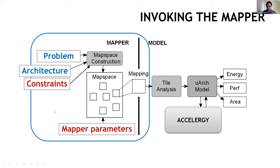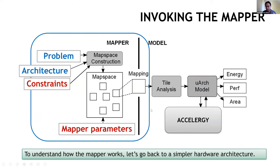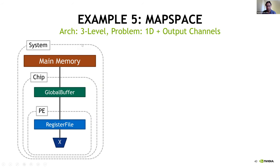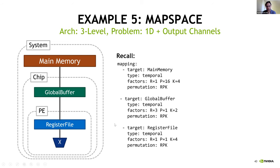To invoke the mapper, you still provide a problem and an architecture, but instead of a mapping, you provide a set of constraints and mapper-specific parameters. The mapper's job is to construct a map space, extract mappings from it, and fire the model on those mappings. The mapper constructs a mapping template for the given architecture — targeting each memory level — with blanks to fill for factors, permutations, and bypass choices. The map space is an enumeration of all ways to fill those blanks.